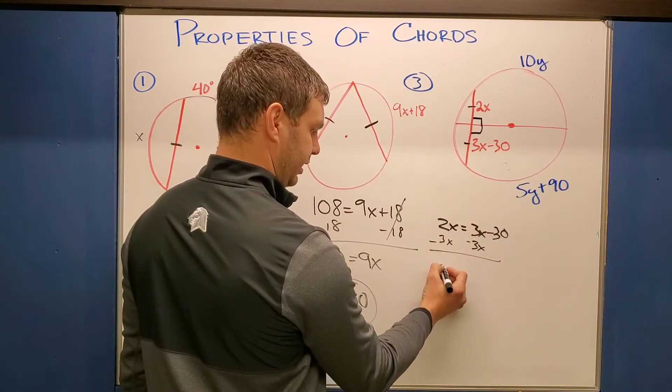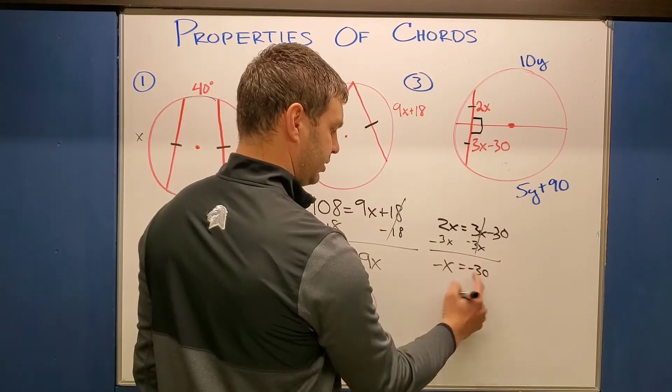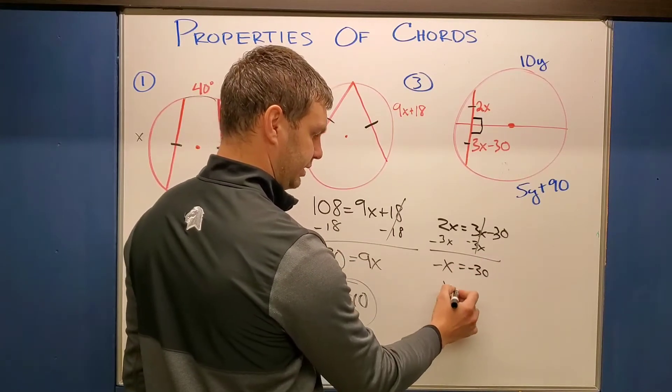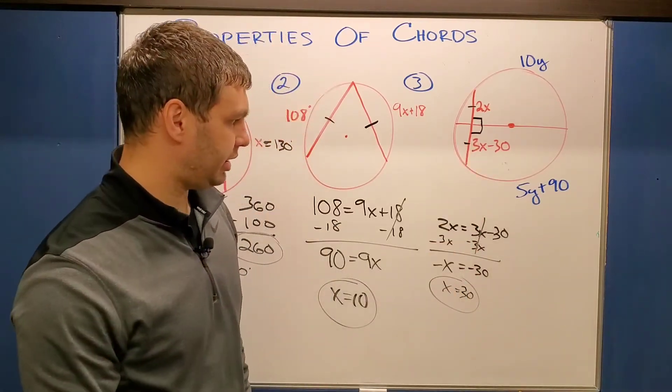This is going to leave me with a negative 1X. I'm just going to say negative X. Those cancel equals a negative 30. So if negative X equals negative 30, then positive X equals positive 30. And so we are good to go with our X's.